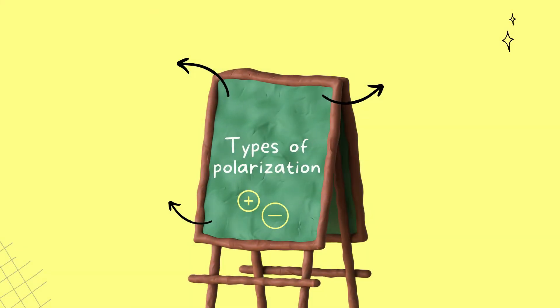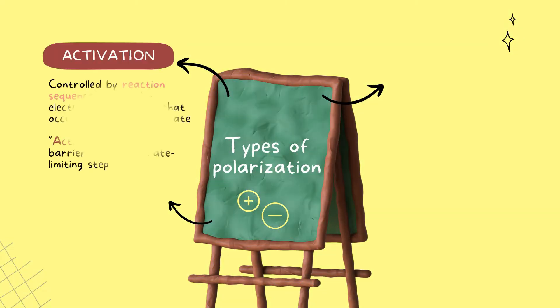Polarization can be classified into three types. First, activation polarization. This polarization is controlled by the reaction sequence at metal-electrolyte interface, by looking on the slowest rate of electrode reaction.